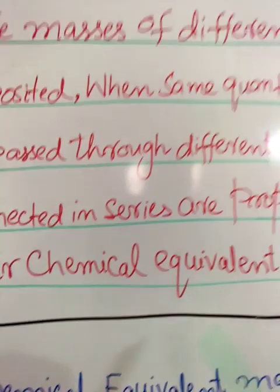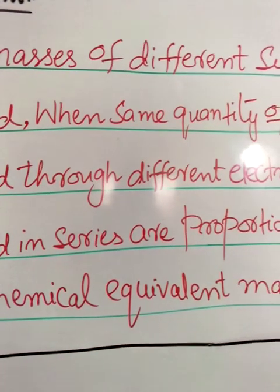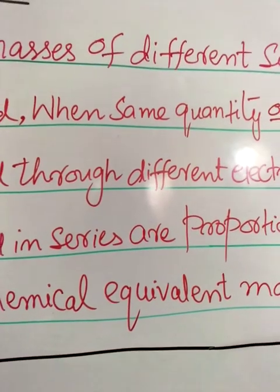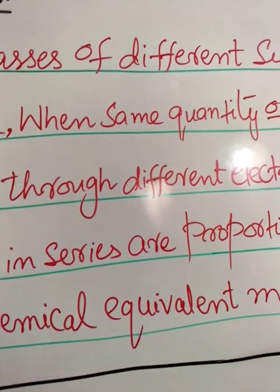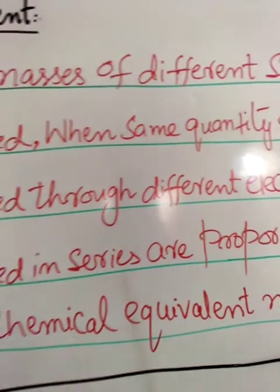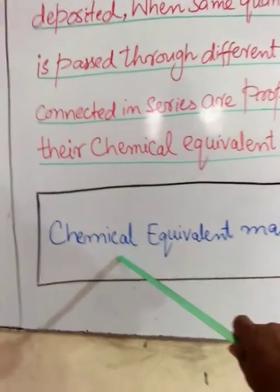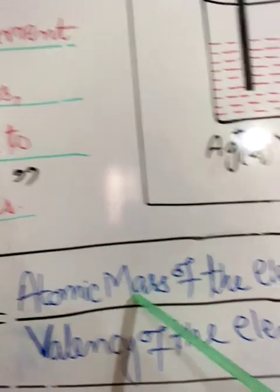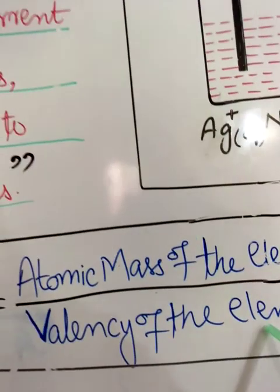Chemical equivalent mass can easily be calculated by dividing the atomic mass of the element deposited on the electrode by its valency. So the formula is: Chemical Equivalent Mass = Atomic Mass of element divided by Valency of the element.